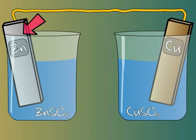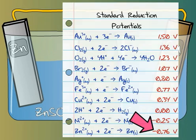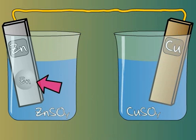Zinc, recall, has a very low reduction potential, meaning that its oxidation potential is very high. In other words, zinc will easily become oxidized to zinc 2+, and in so doing, it becomes water-soluble and drifts off into the solution.